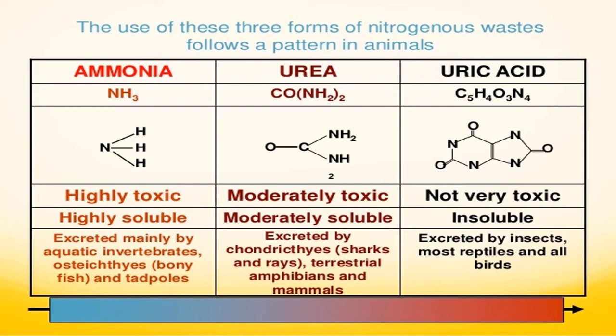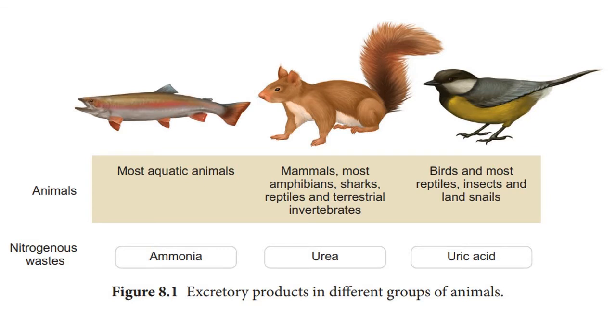Nitrogenous wastes include ammonia, urea, uric acid and creatinine. All of these substances are produced from protein metabolism. In many animals, urine is the main source of excretion for such waste. In some, faeces is.